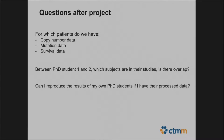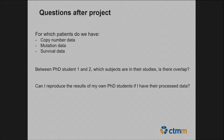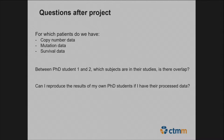There are generic questions like: for which patients do we have a particular type of data — copy number, mutation, survival? Another question is whether there was an overlap in patients between two PhD students working on the same study. And a really nice question: can I actually reproduce the results of my PhD student if I have the same data they used for their analysis?